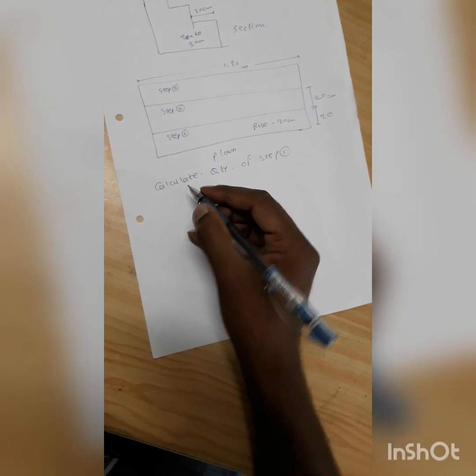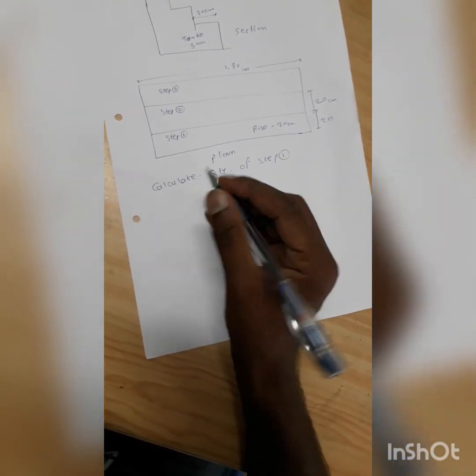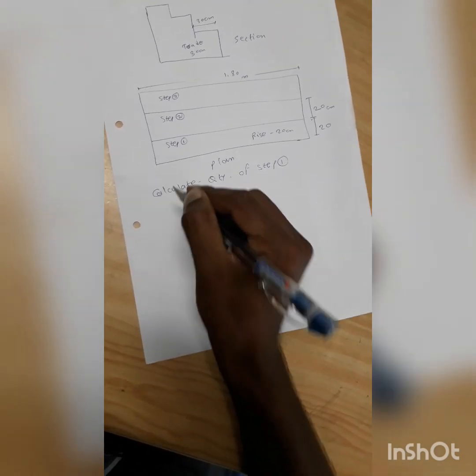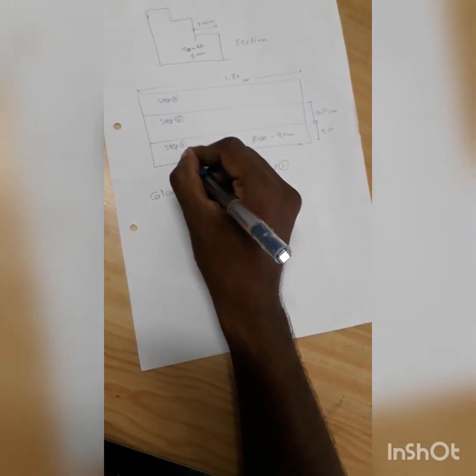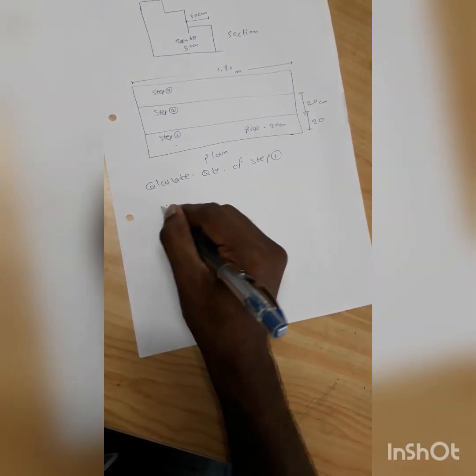It was an MCQ question, hence we can judge the answer in just one to two steps. First, for step one, we have to calculate by multiplying: quantity is equal to length into width into height.